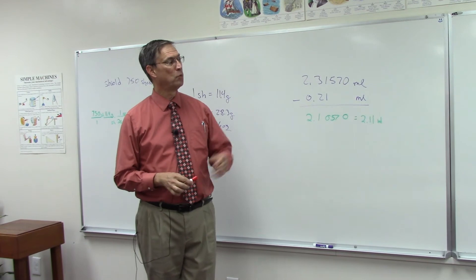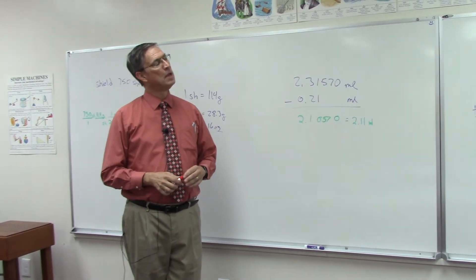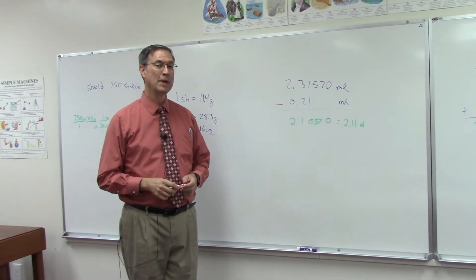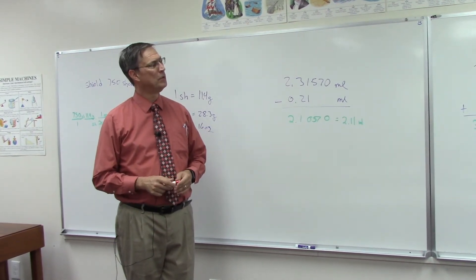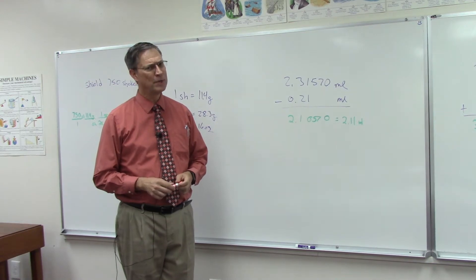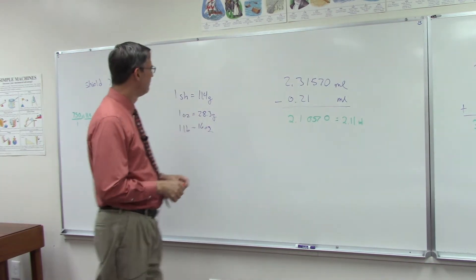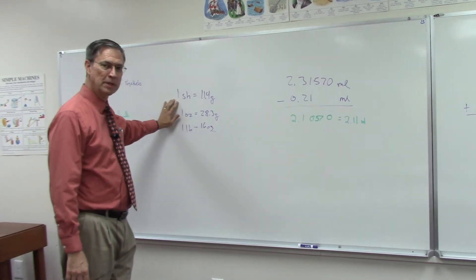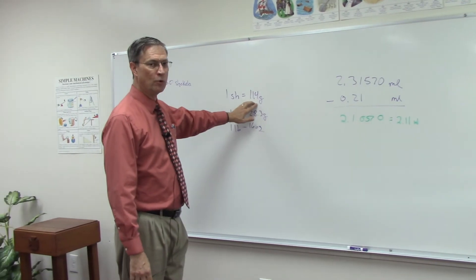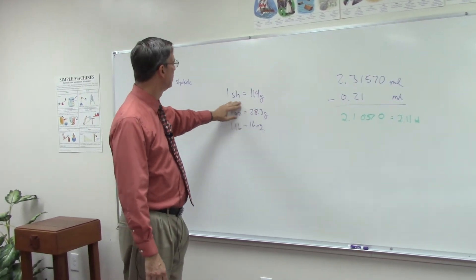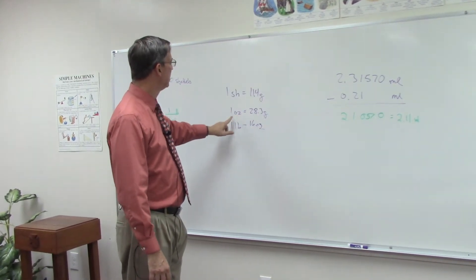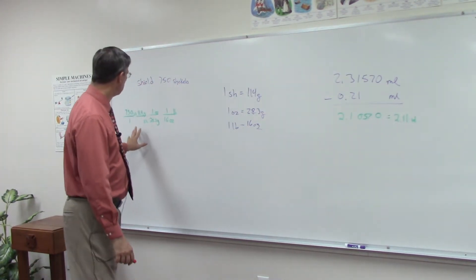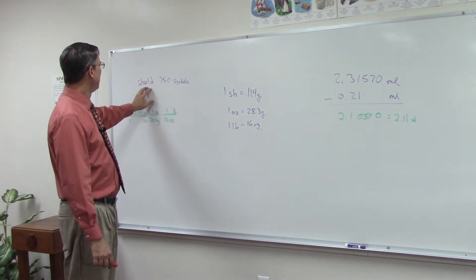These are not the exact ones that are on your checkup, but they're similar. I actually have these up here because I was just helping a couple of students who needed some extra help beyond the first couple of videos. Let's talk about this. Shekels in the Bible, it tells us, are 11.4 grams. Shekels are in the Bible, and we can convert from grams to ounces to pounds.